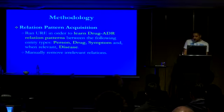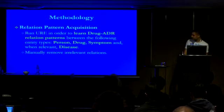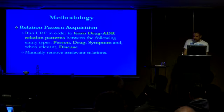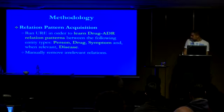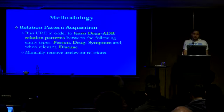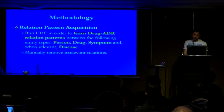We used our text mining framework on a sample of the data in order to learn and acquire the drug-ADR relation patterns. Those patterns relate the following entities to each other: person, drug, symptoms, and disease. We then manually went over the acquired relations and removed irrelevant ones — and this was essentially the only manual task performed during this relation pattern acquisition step.